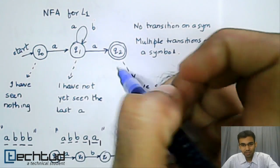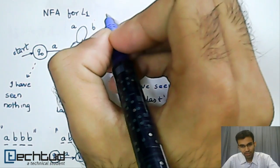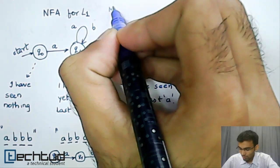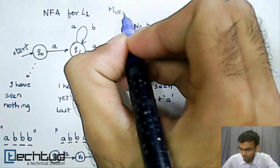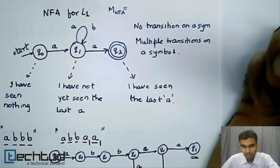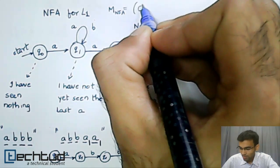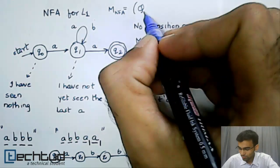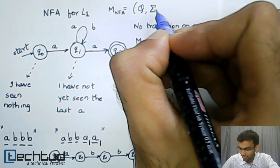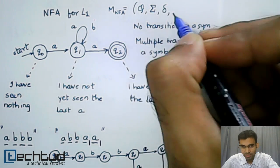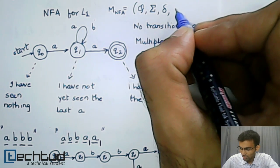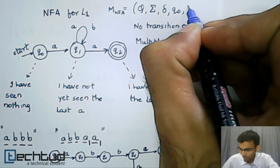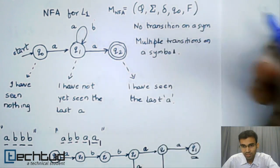Like the DFA definition, the NFA definition is very similar. An NFA is defined as MNFA equals a finite set of states Q, the alphabet sigma, a transition function delta, an initial state Q0 and a set of final states F.